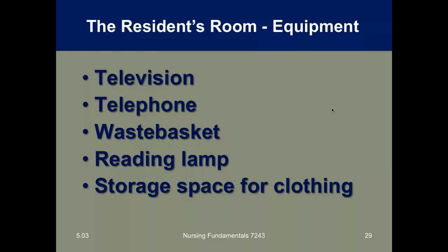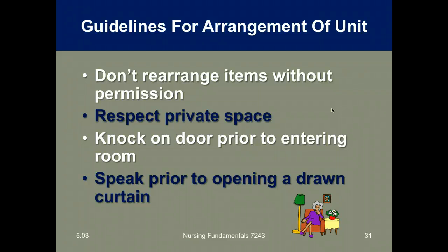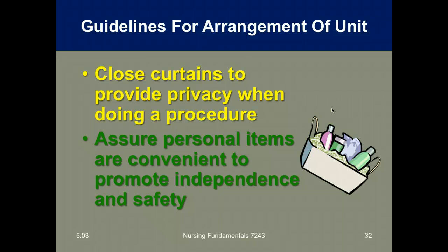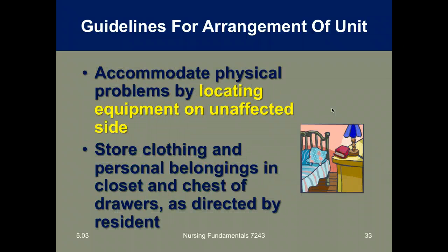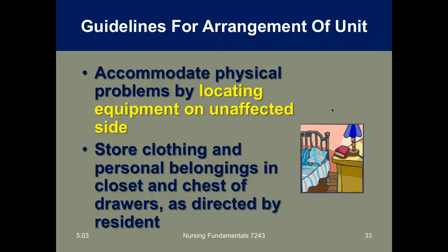Other items in the room may include a television, telephone, waste basket, reading lamp, and storage space. On the nursing unit, do not rearrange items without permission. In the resident's room, respect their private space — knock on doors before entering and speak before opening a drawn curtain. Close curtains to provide privacy when giving a bath, ambulating, or changing a patient. Ensure personal items are convenient to promote independence and safety. Accommodate physical problems by locating equipment on the unaffected side — for example, if a resident has left-sided weakness from a stroke, place their hairbrush on the right side. Store clothing and personal belongings in closets and drawers as directed by the resident.